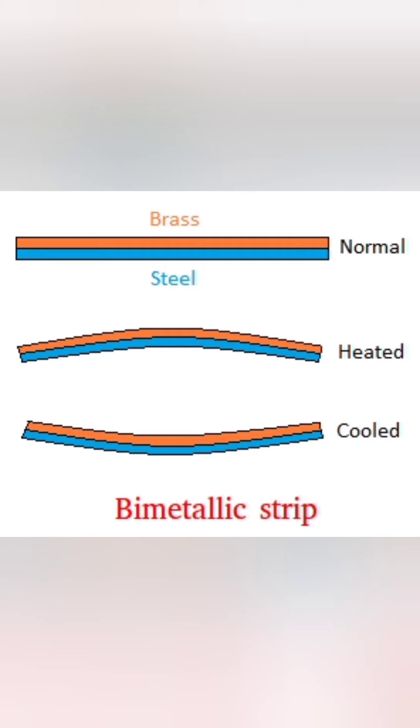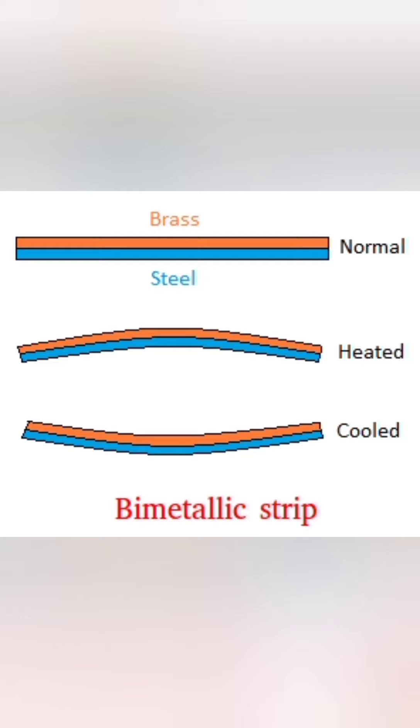A bi-metallic strip is a pair of brass and iron strips fixed together tightly. As brass expands more than iron for the same application of heat, the bi-metallic strip bends towards the iron side on heating and straightens on cooling. It is used in thermostats in appliances such as clothes irons, water heaters and toasters to keep the temperature at the required level.